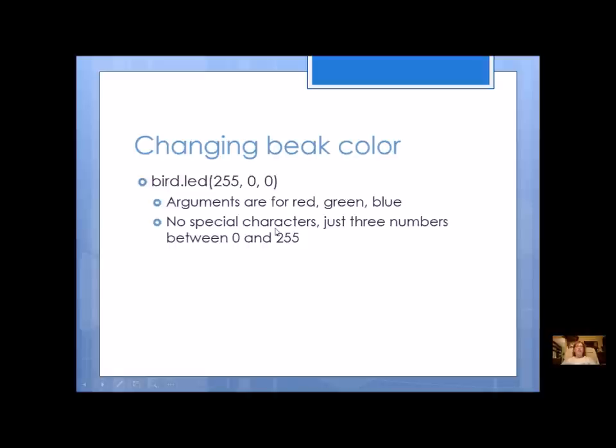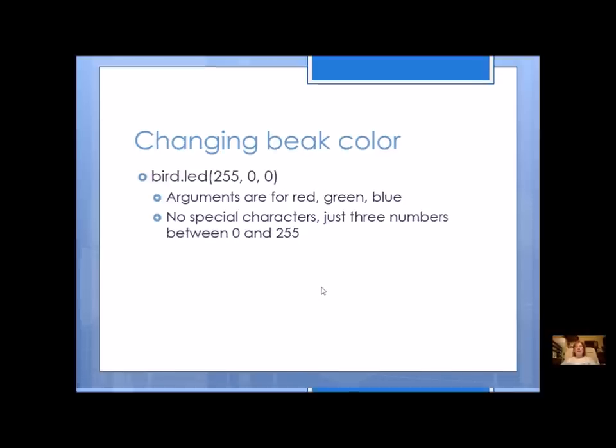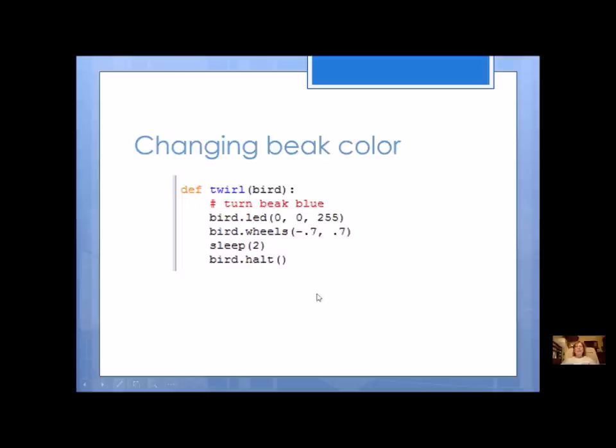The arguments have no special characters, just three numbers between 0 and 255. An example would be like this. This one's going to be blue because I have 0 red, 0 green, and 255 blue.